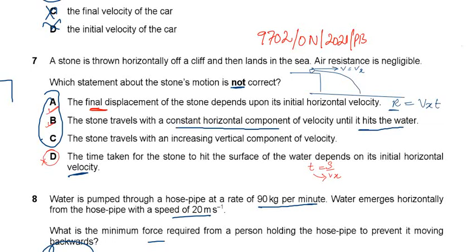If a stone is thrown horizontally, the initial velocity is the horizontal component only — there is no vertical component of the velocity at the start. After a certain time, it falls into the sea.